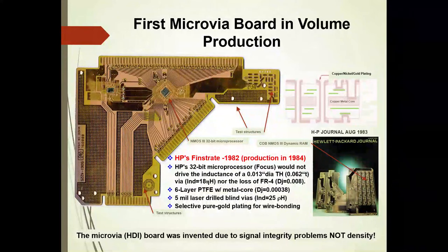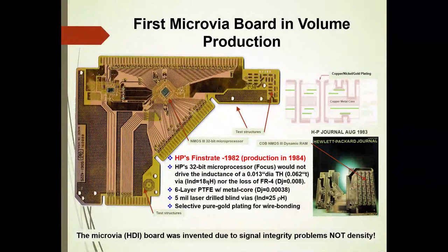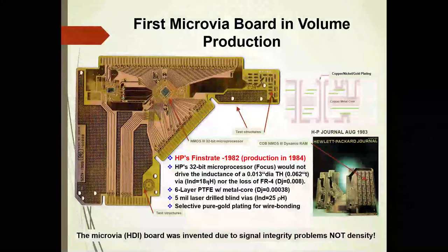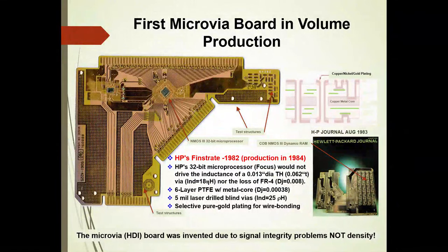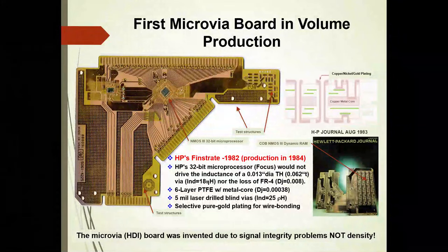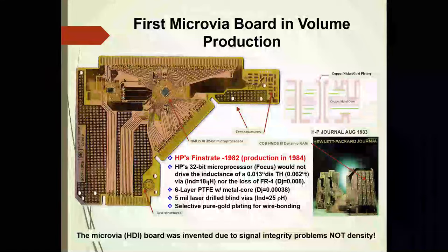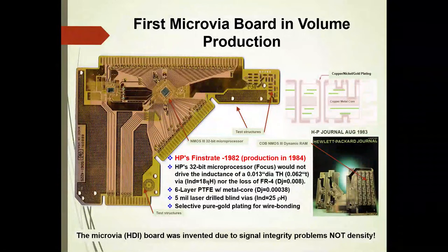Because we're talking about high-density interconnect, this is the first micro via board in volume production that I found, produced in 1982. Interestingly, HDI was not invented due to density — it was invented because in 1982 we had the NMOS3 chip, seen in the middle of the figure, which was the first complete 32-bit microprocessor on a single chip. You might know this as related to the Pentium, since Intel was a partner of Hewlett-Packard. But before the Pentium was what we called the focus chip.